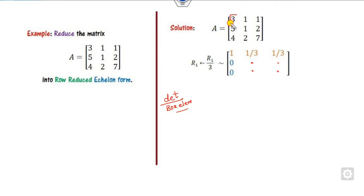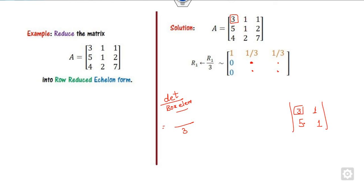The rule is: determinant divided by box element. The 'box element' is the current pivot. To find a new value, take the previous value, choose the other two values from the matrix forming a box with the pivot, and find the determinant — always starting from the box element. For example: box element is 3, previous value is 1, other values are 1 and 5; determinant is 3 minus 5 = minus 2, so the answer is minus 2 divided by 3.